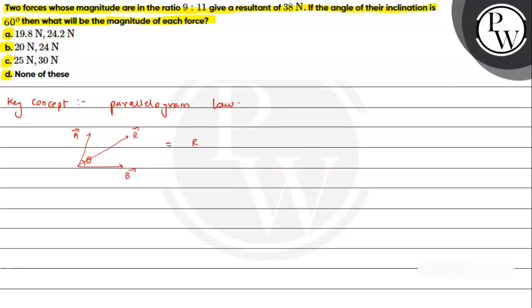We can write its magnitude r bar mod and that will be equal to under root of a square plus b square plus 2ab cos theta. So this is how we can use parallelogram law.